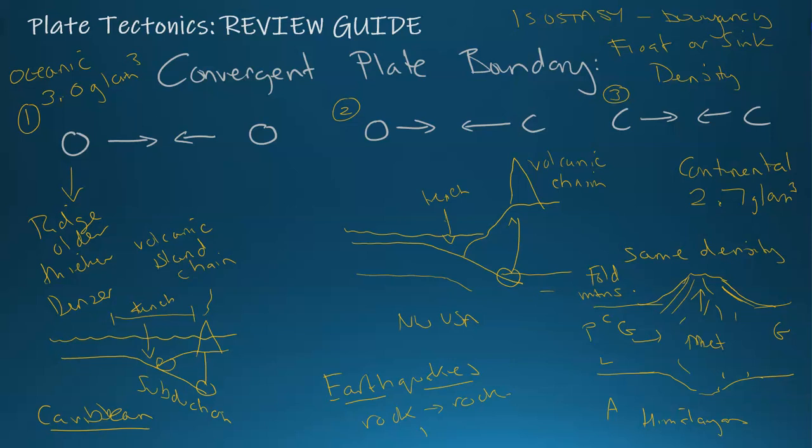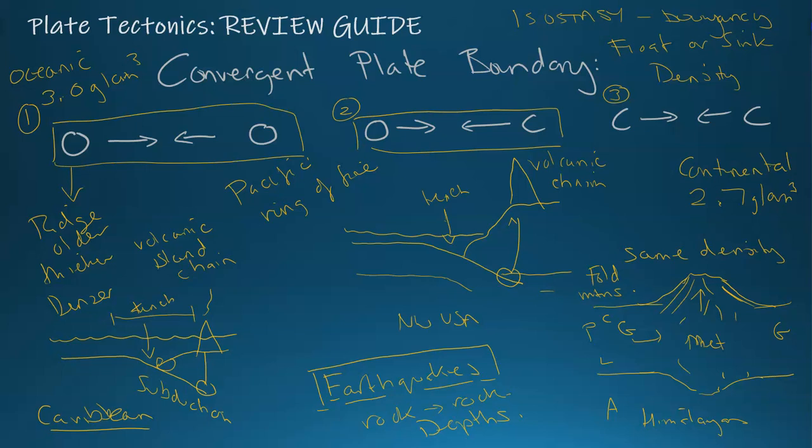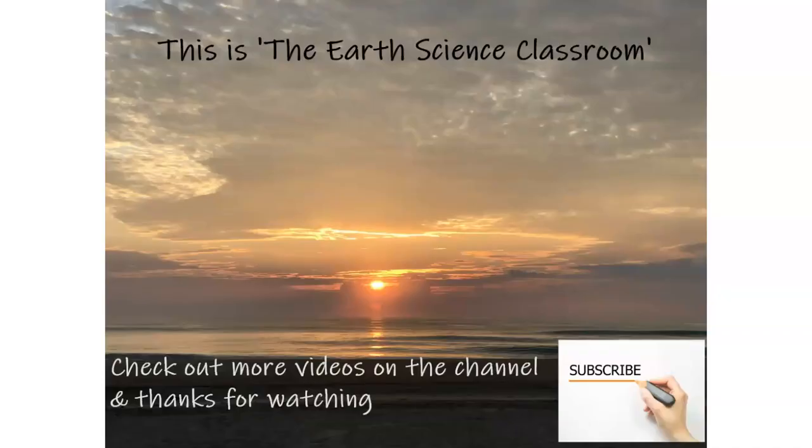You have earthquakes of certain depths and certain intensities and magnitudes, but earthquakes are pretty consistent around the entire plate boundaries and tectonics. A good example is the Pacific Ring of Fire, which has mostly ocean to continental convergence. It has some ocean to ocean convergence with the Philippine plate. These two are combined with the Ring of Fire and is the most extensive line of earthquakes and volcanoes on the planet. This is the Earth Science Classroom.